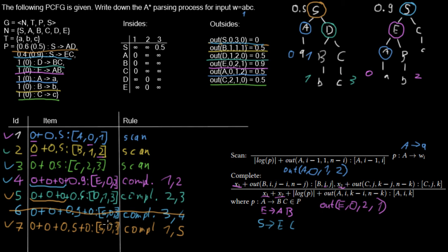Now there are no more items on the agenda and we are done. This S item spanning 0 to 3 is our goal item — it is the start symbol with a span over the whole input. The parsing process was successful and we found the tree with the best weight.